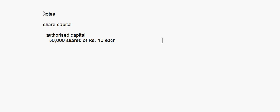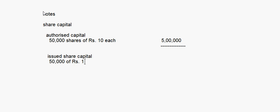In the share capital notes, you will have columns for authorised capital. Supposing authorised capital is also 50,000 equity shares of rupees 10 each — that is 5 lakh. Then issued share capital: 50,000 shares of rupees 10 each — also 5 lakh.